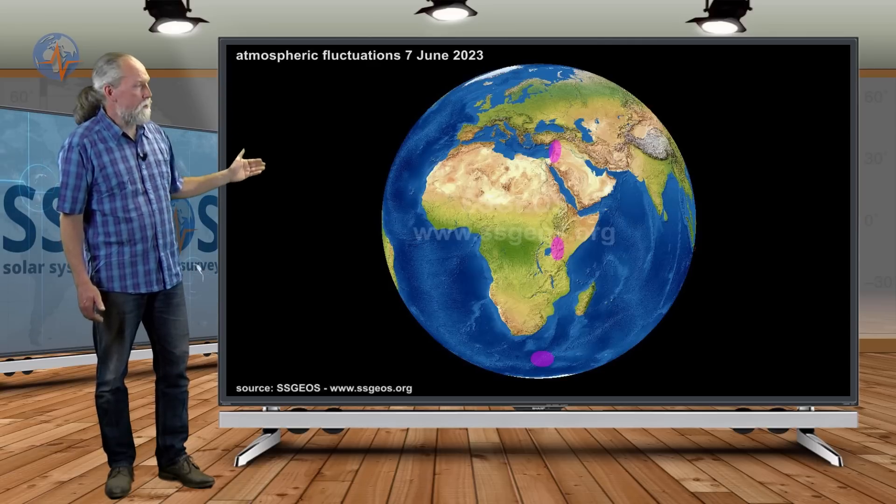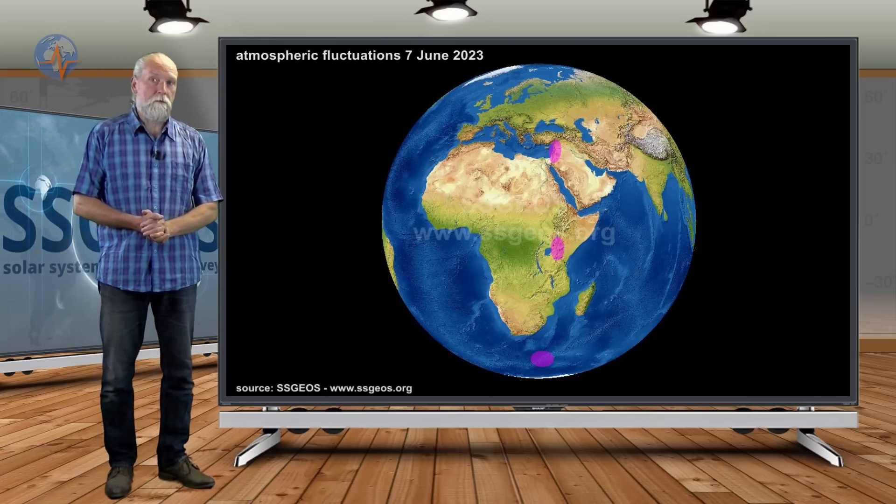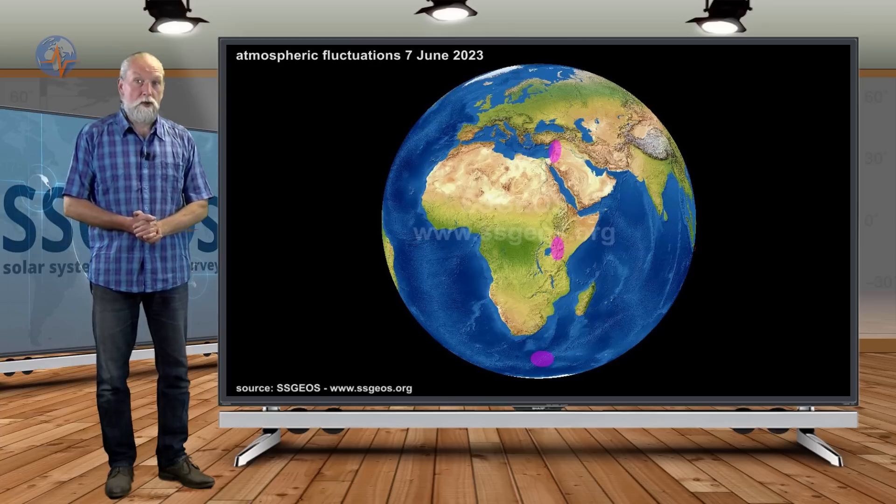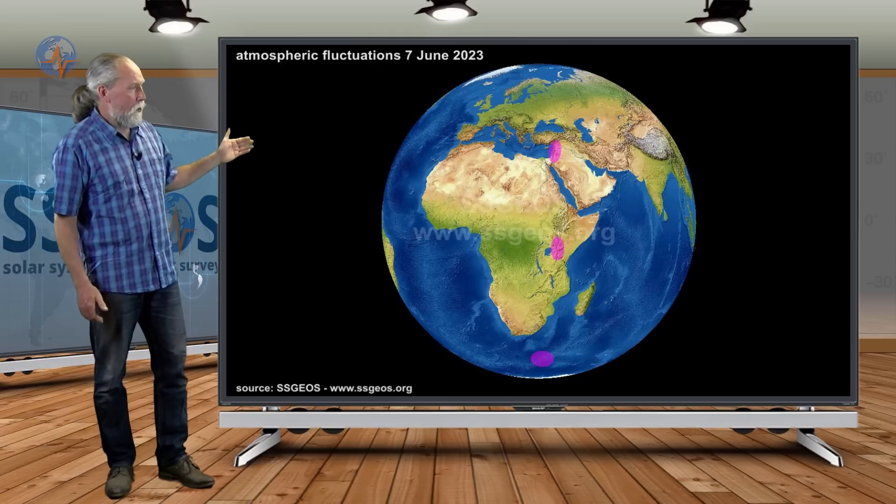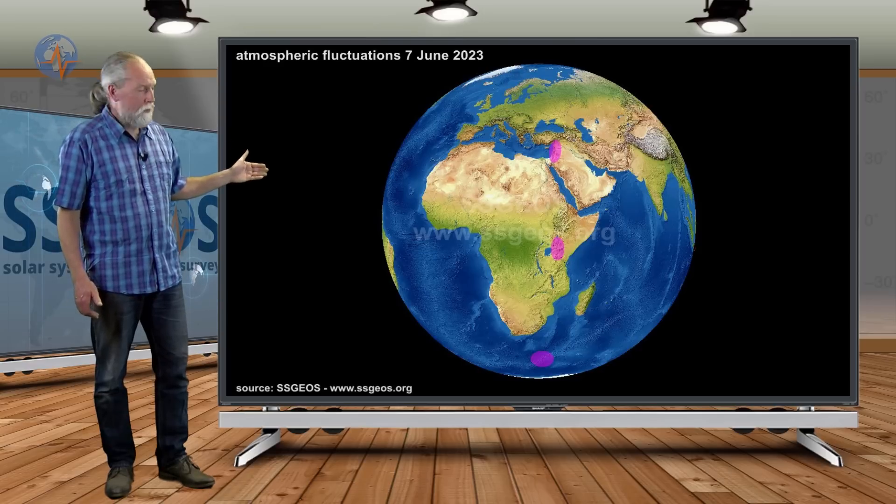We had fluctuations in the Middle East of Africa and south of Africa. We did have a magnitude 5 earthquake in South Africa. Not sure if these fluctuations are still relevant, but I am showing them to you because they are the most relevant and strongest fluctuations that we had in recent days.